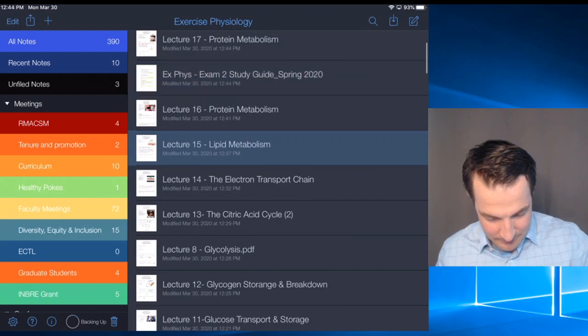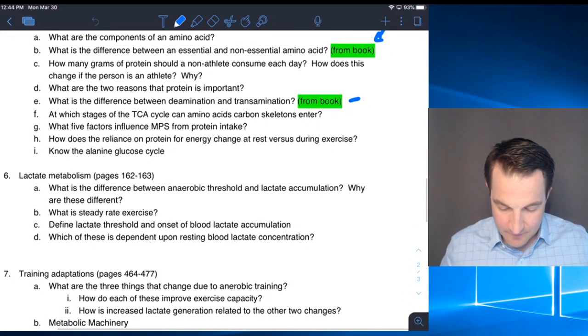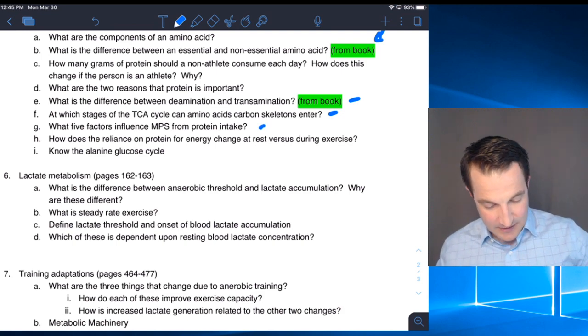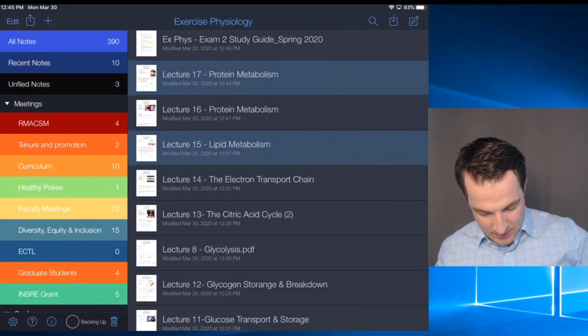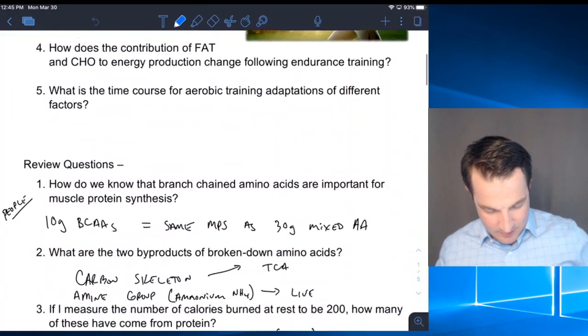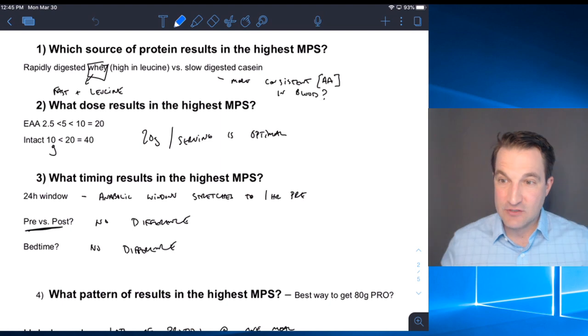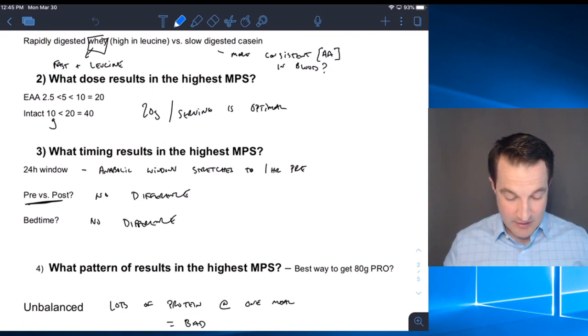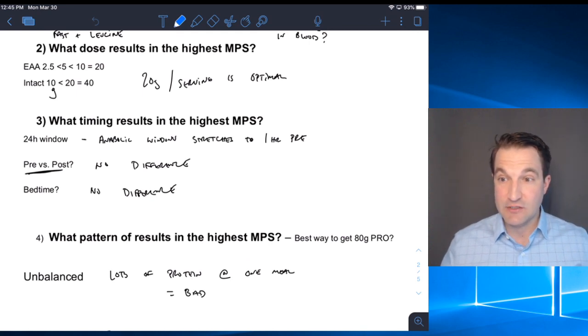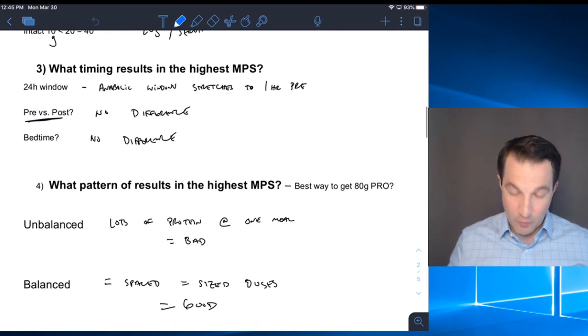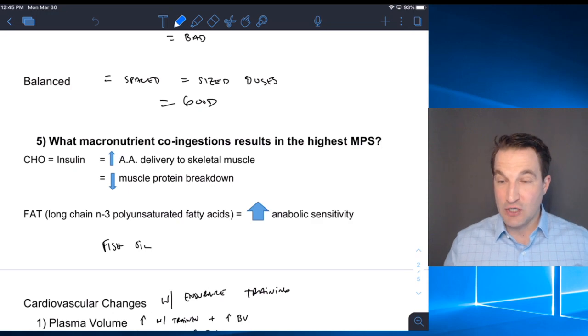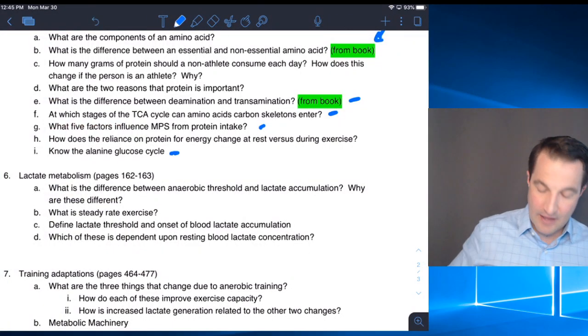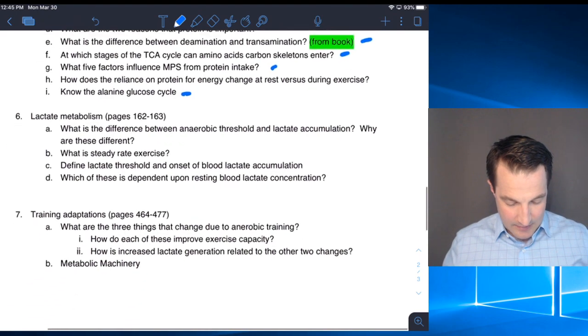The five factors that affect protein synthesis are going to be the source—is it fast digesting or slow digesting? What kind of dose, how many grams? The timing, especially in relationship to when that resistance training protocol was undertaken. What's the pattern over the course of the day? And the last one is macronutrient co-ingestion. Understanding that alanine-glucose cycle and knowing the steps is going to be really important.